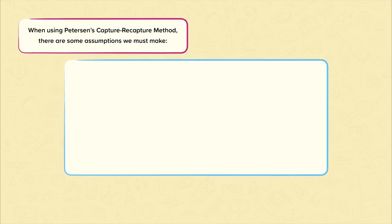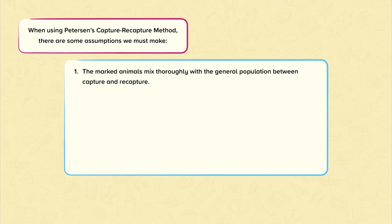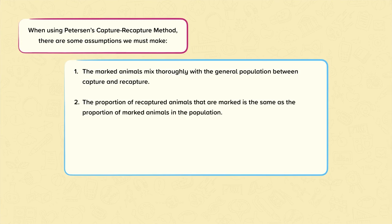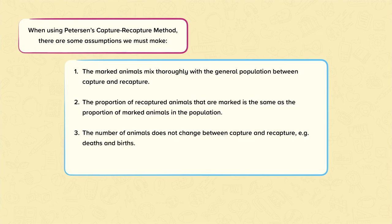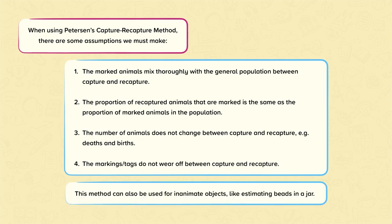When using Peterson's capture-recapture method, there are some assumptions we must make. The marked animals mix thoroughly with the general population between capture and recapture. The proportion of recaptured animals that are marked is the same as the proportion of marked animals in the total population. The number of animals does not change between capture and recapture, for example through deaths or births. The markings or tags do not wear off between capture and recapture. This method can also be used on inanimate objects, like estimating beads in a jar, and not just on animals.